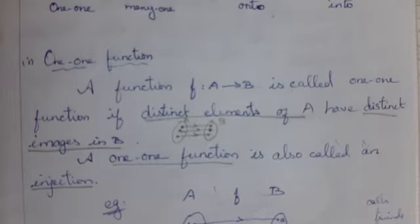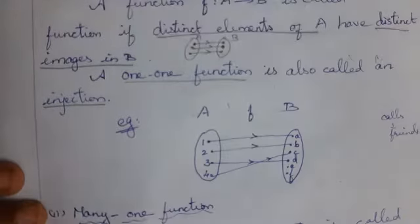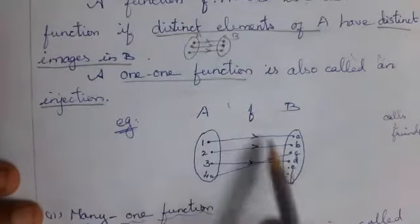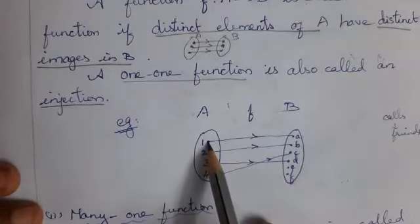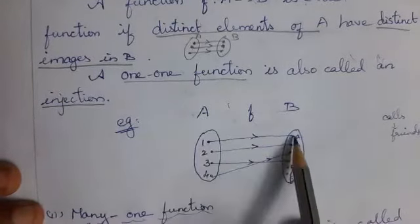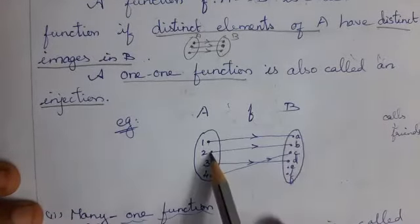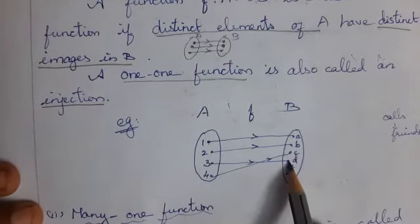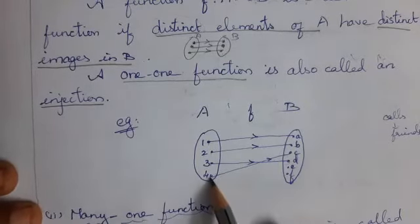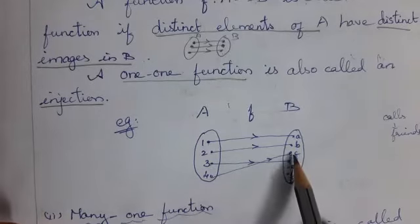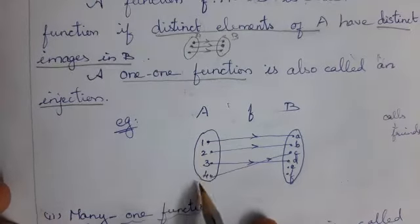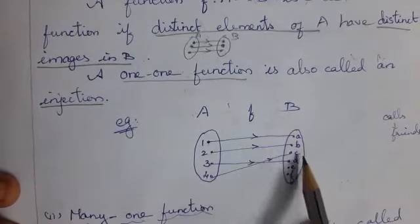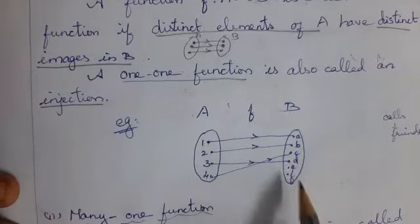See another example for one-one. Set A and B — the functions are drawn here. For 1, you have image a. For 2, you have image b. For 3, you have image d. For 4, you have image c. For every element in A, you have a distinct image in B. Therefore, this is a one-one function.